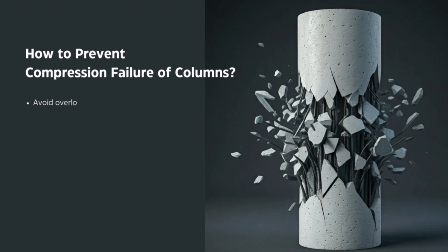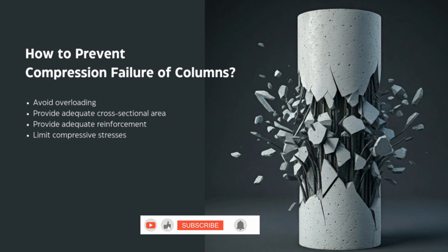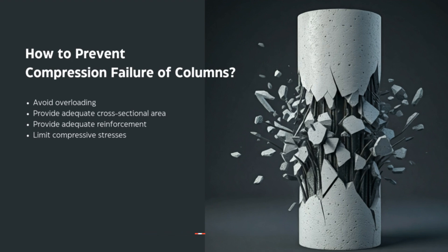To prevent compression failure of columns: first, avoid overloading — ensure the load remains within design limits. Second, provide adequate cross-sectional area — the column size should be sufficient for the applied load. Third, provide adequate reinforcement — to limit compressive stresses, the developed stresses must be lower than the design strength.